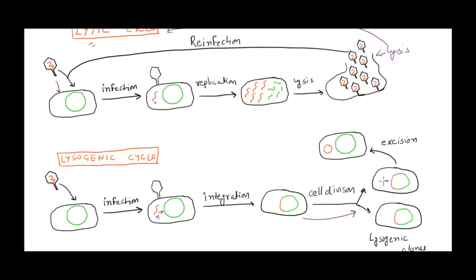There can be a situation where this viral DNA releases back from the host chromosome — excision takes place — and the viral genome becomes active again. Once active, it takes over the host machinery, follows the lytic cycle, forces the host to produce viral particles, degrades the bacterial genome, and once the viral particles are packed, the host undergoes lysis and releases into the environment to reinfect a new host.